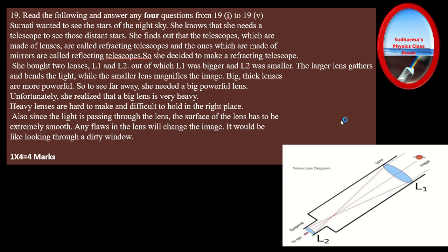Let us read the paragraph. Sumati wanted to see the stars of the night sky. She knows she needs a telescope to see distant stars. She finds out that telescopes made of lenses are called refracting telescopes, and ones made of mirrors are called reflecting telescopes. She decided to make a refracting telescope. When reading the paragraph, underline or keep in mind all important terms — because we do not know what questions are waiting, and if you must come back to re-read, you lose time.